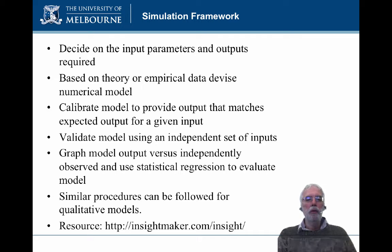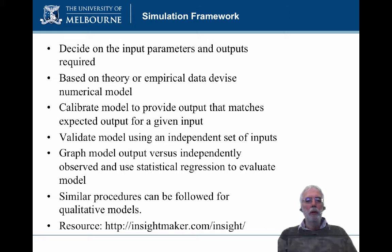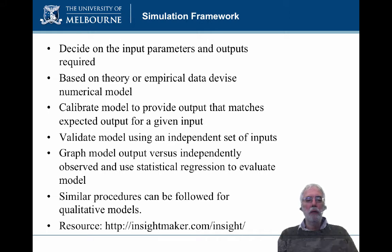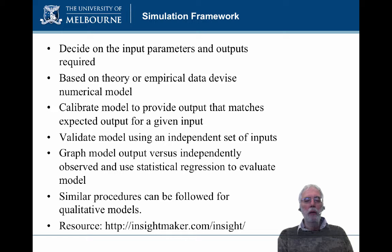Having calibrated the model, you should validate it using an independent set of inputs. This will ensure that your calibration is valid. Then you are ready to use the model. You can systematically provide artificial or hypothetical inputs, or have other data gathered from other places, for example weather data or other simulation data, and run the model and look at the outputs. A graphical output is most useful because it can reveal behaviours of the model that are not obvious by looking at numbers or statistics. You should also look at techniques such as statistical regression to evaluate the model.